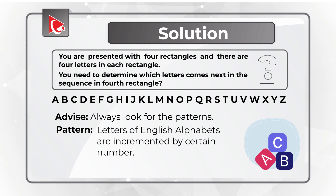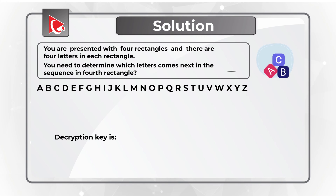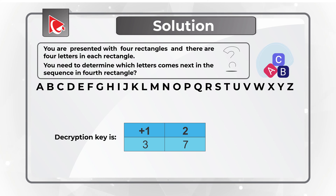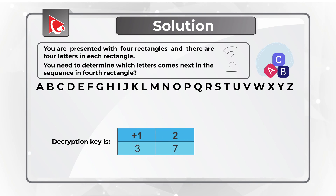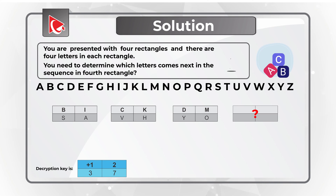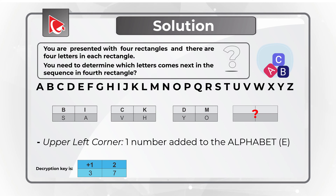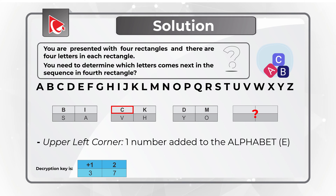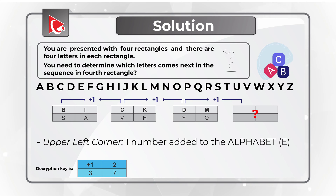Letters of the English alphabet are incremented here by a certain number. The increment number is different for each section of the rectangle, and the decryption key — if you're familiar with encryption and decryption — is 1, 2, 3, and 7. Let's look into details. Starting with the upper left corner of the rectangle and looking at the existing sequence, you see that the letters are B, C, D, and they match the English alphabet one to one, so the next letter would be E.